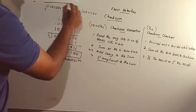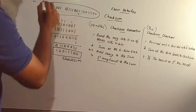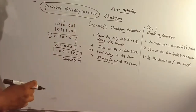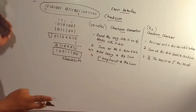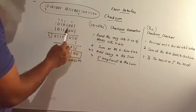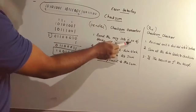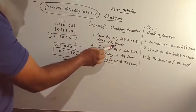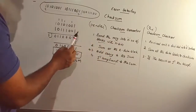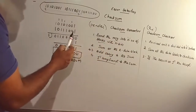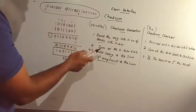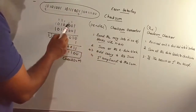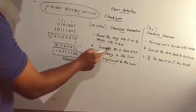Now we send the message to the receiver. At the receiver side, we perform the checksum verification. The original message is divided into K number of blocks, each with N bits. For example, if we take 16 bits, we divide into two blocks.